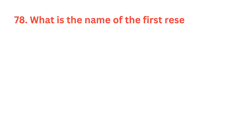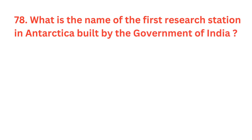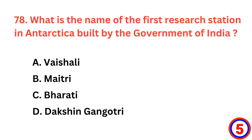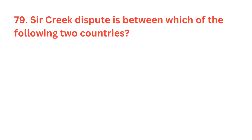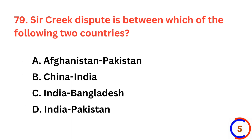What is the name of the first research station in Antarctica built by the government of India? The correct answer is option D, Dakshin Gangotri. Siachen dispute is between which of the following two countries? The correct answer is option D, India and Pakistan.